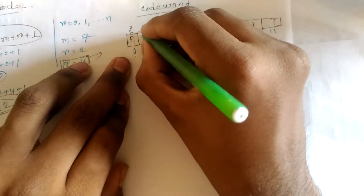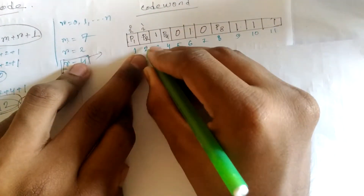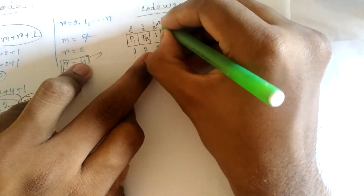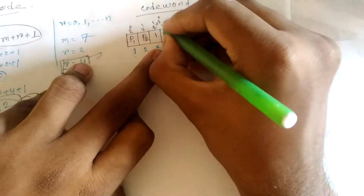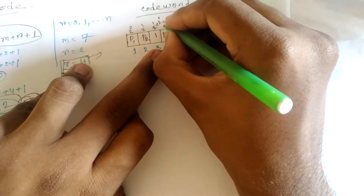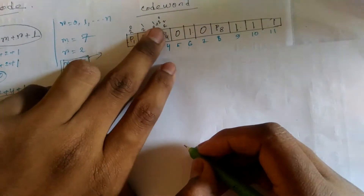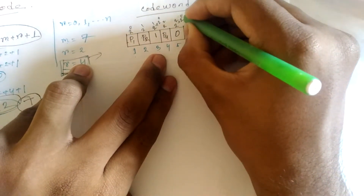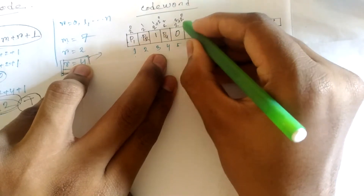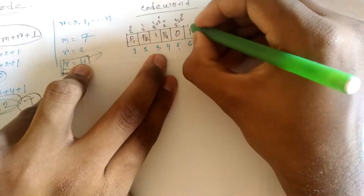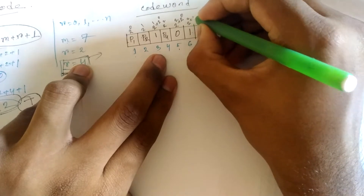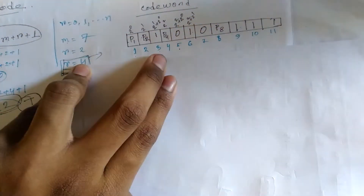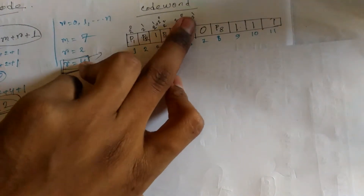Here, 2 to the power 1 is 1, then 2 to the power 1 plus 2 to the power 0 gives 3. We add 3. Then 2 to the power 2 is 4. We add 4, then 2 to the power 0 gives 5. Two to the power 2 plus two to the power 1 is stronger.